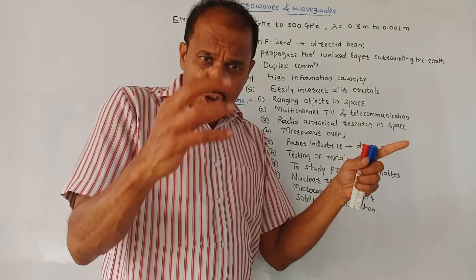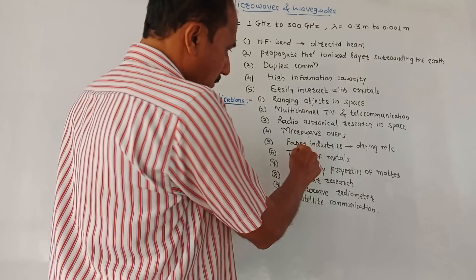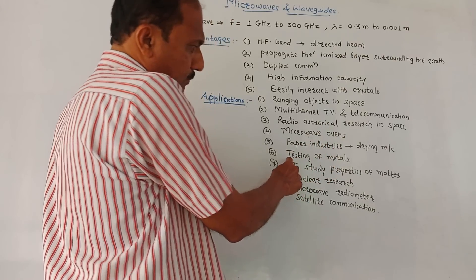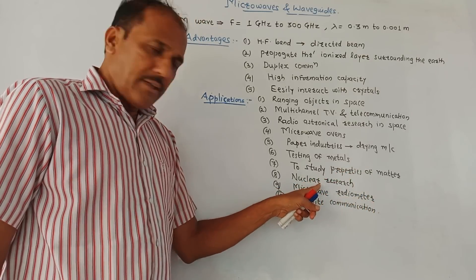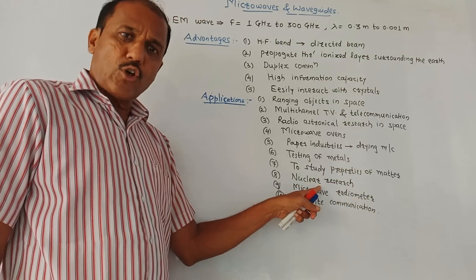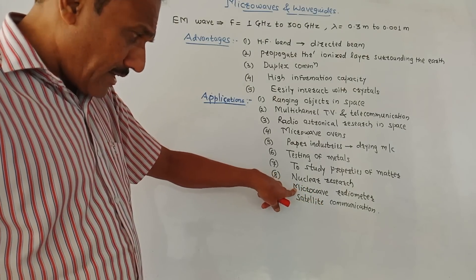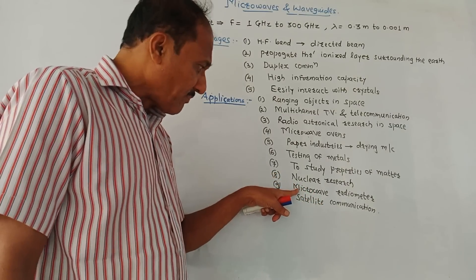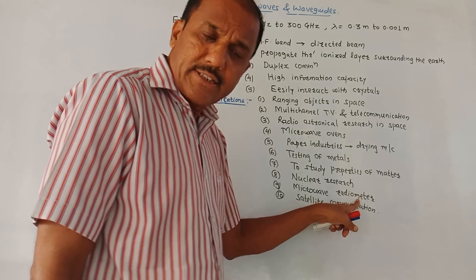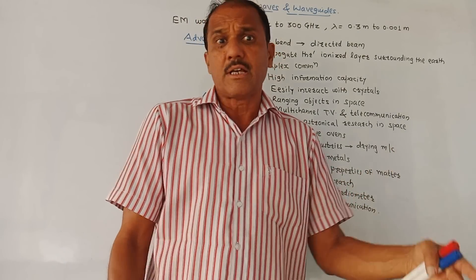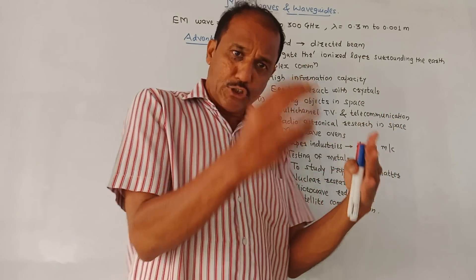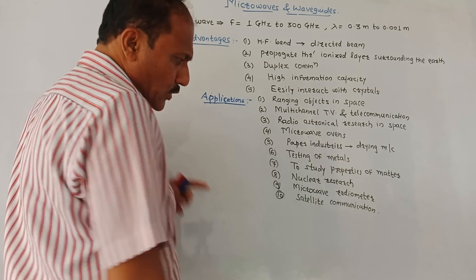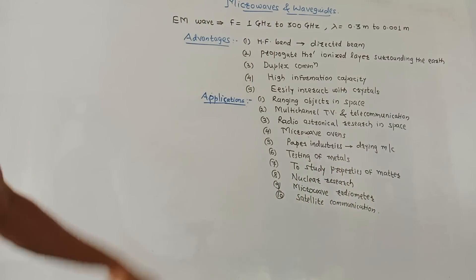Next, they are used in case of drying machines in the paper industries. Next, for the testing of metals. Then next is to study properties of the matter. Then the microwaves are also used in case of nuclear research. Then as far as these biomedical applications are concerned, microwave radiometer is an important application, important device. Microwave radiometers are used to detect the exact cancer tissues. Next is, microwaves are used in case of satellite communication. So these are advantages and applications of the microwave.